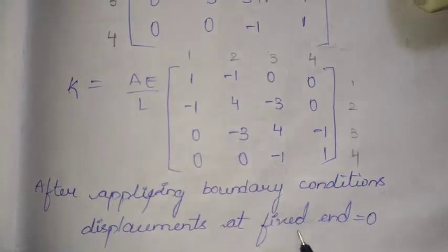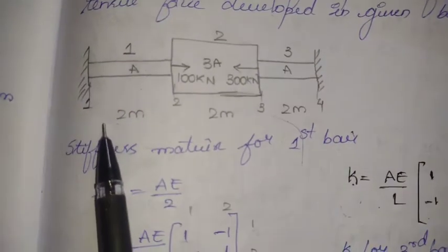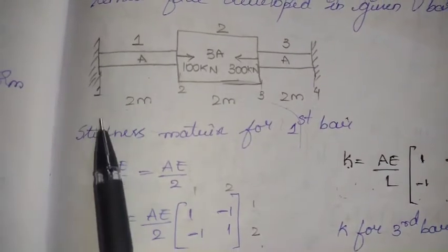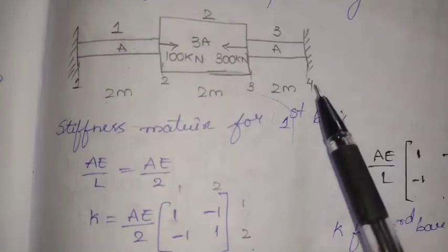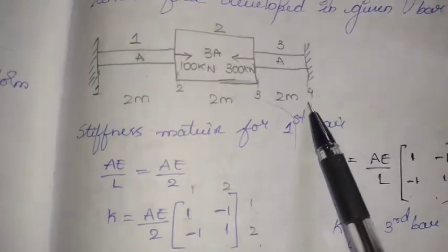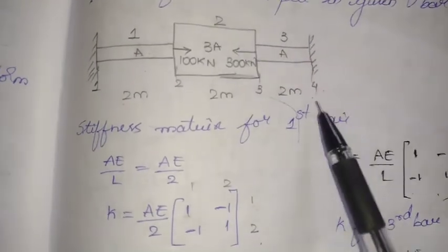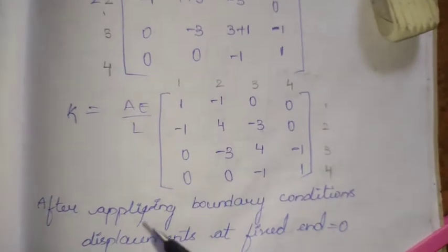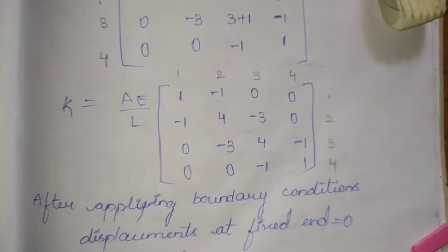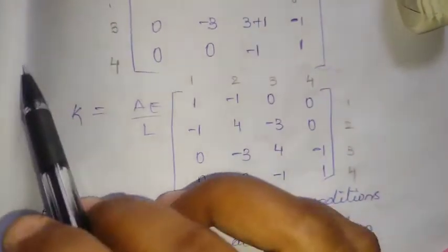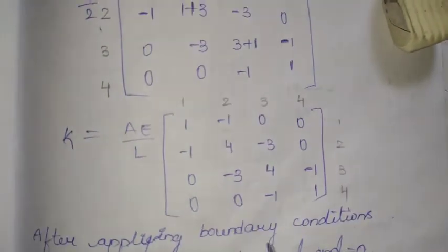Now we apply the boundary conditions. We see that at nodes 1 and 4, the ends are fixed, meaning the displacements at these nodes are zero. We substitute the displacements as zero and apply these boundary conditions to the global stiffness matrix we obtained.